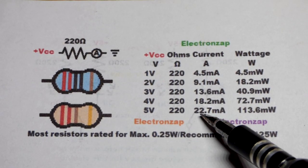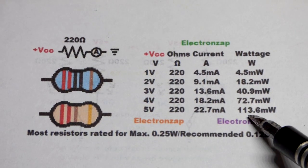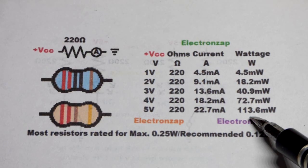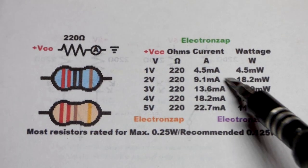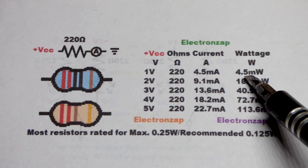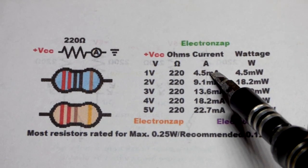But you notice, with the 5 volts across there, 5 times the current, we have a lot more than 5 times the wattage versus just 1 volt across it. That's because it is voltage times current.